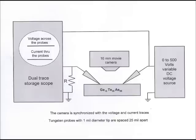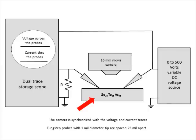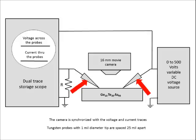This is the test setup we used to show the switching and the storage mechanism of phase change memory. The red arrow points to the chicaginite material. These are the tungsten electrode probes. Normally we apply positive voltage to the probe at right. The probes are spaced 25 mils apart and the tip of the probe is 0.25 mil in diameter.